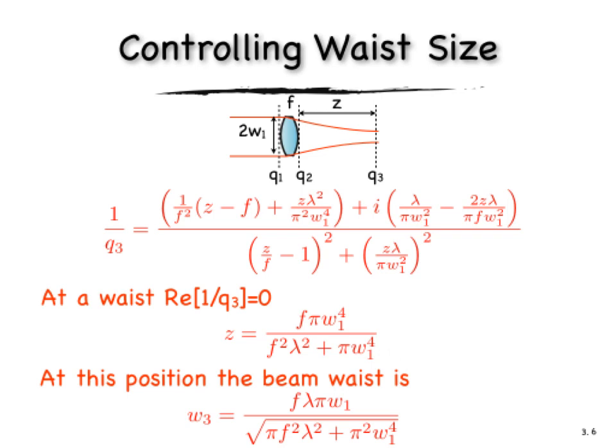And once we know where the waist is, we can plug that value for Z in to the Q parameter, get an expression for the Q parameter, which we can then solve for W3, the size of the waist, and that's given here on the bottom. So now, we've calculated the position and the size of the waist.